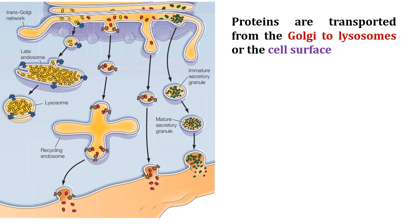The trans-Golgi network is the last part of the Golgi and delivers its content to appropriate cellular locations — for example, from the trans-Golgi network to the lysosome, to the cell membrane, or to the extracellular space, via secretory granules. There are three main distinct routes for protein transport from the Golgi.